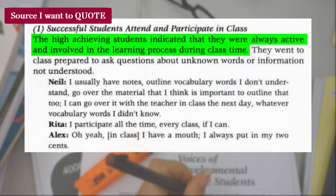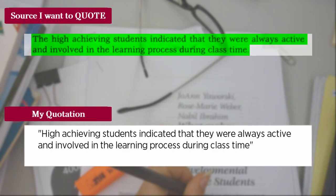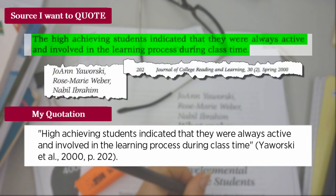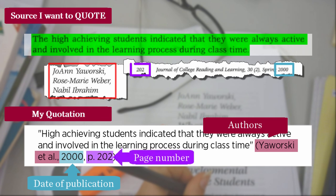Here's how to quote this text. The in-text citation for a quotation would look like this. When quoting, include the author's name, date of publication, and the page number.